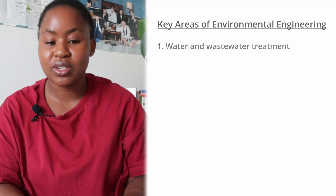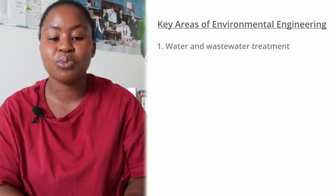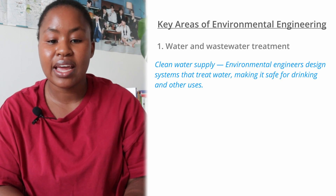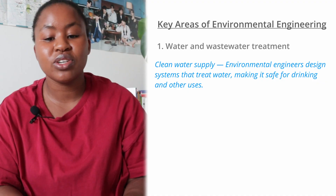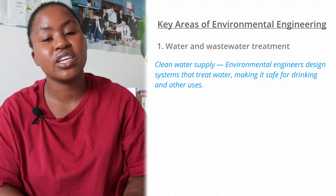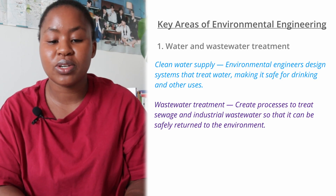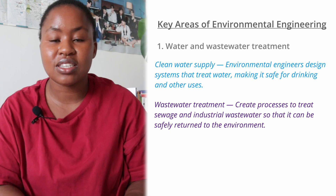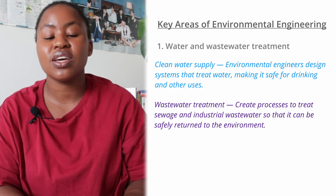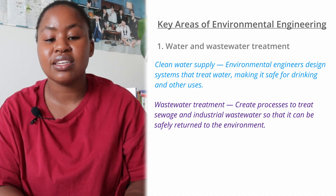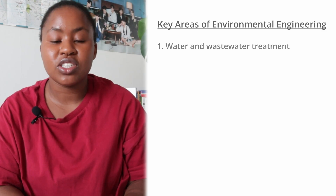The first key area is water and wastewater treatment. Environmental engineers work to provide a clean water supply, whereby they design systems that treat water, making it safe for drinking and other uses. They also work with wastewater treatment, where they create processes to treat sewage and industrial wastewater so that it can be safely returned to the environment.